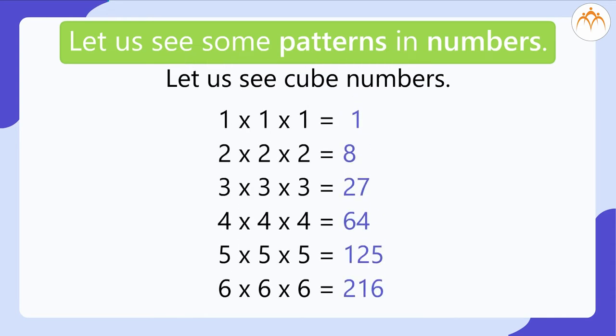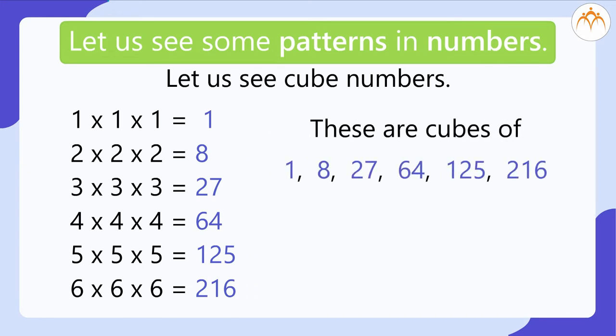Let us see cube numbers. 1 times 1 times 1 equals 1. 2 times 2 times 2 equals 8. 3 times 3 times 3 equals 27. 4 times 4 times 4 equals 64. 5 times 5 times 5 equals 125. 6 times 6 times 6 equals 216 and so on. These are cubes of 1, 2, 3, 4, 5, and 6 respectively.